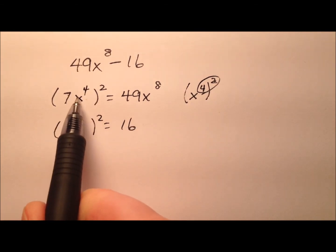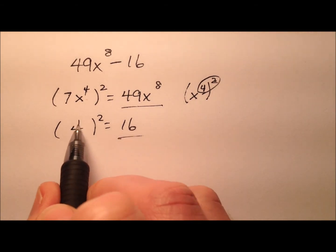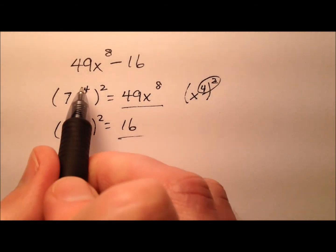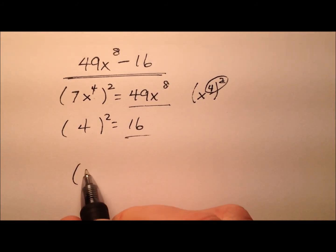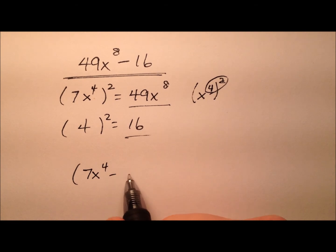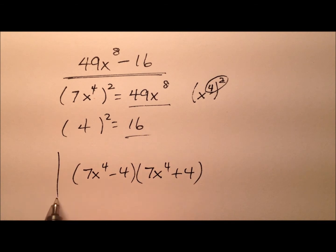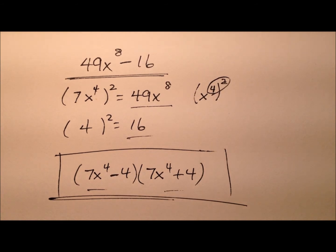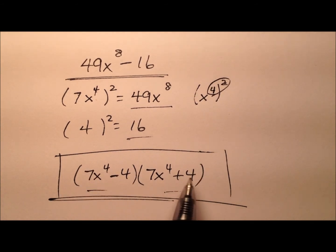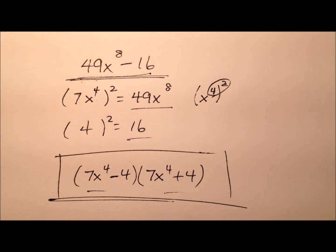So 7x to the 4th is the square root of 49x to the 8th, and the square root of 16 is 4. So the factorization is 7x to the 4th minus 4 times 7x to the 4th plus 4 — two binomials multiplied together, one with a minus and one with a plus. Distribute this out and you'll see the middle terms cancel, leaving the original binomial expression.